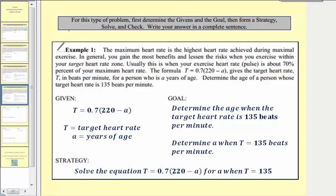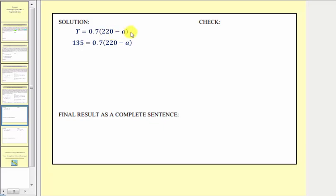Our next step is to find our solution. Here's the given equation which we want to solve when T equals 135. So I've already substituted 135 for T and now we want to solve the equation for A. Our first step is to clear the parentheses on the right side by distributing 0.7. So we'll have 135 equals 0.7 times 220 equals 154, and then we have 0.7 times negative A, which would be negative 0.7A or minus 0.7A.